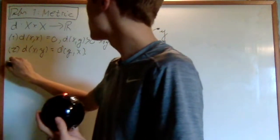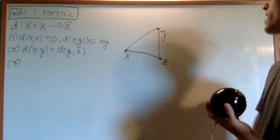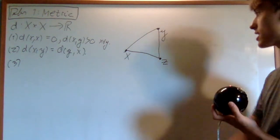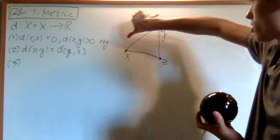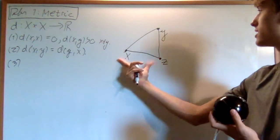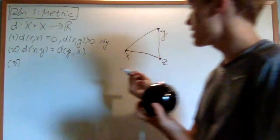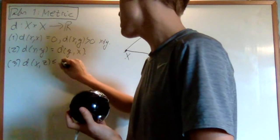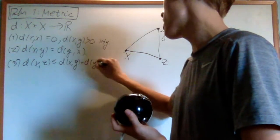The third condition is going to involve another point z. So we have this new triangle. There's something called the triangle inequality which says that the sum of the distances of any two sides of a triangle should be bigger than the third side. So the distance between x and z should be less than or equal to the distance between x and y plus the distance between y and z.